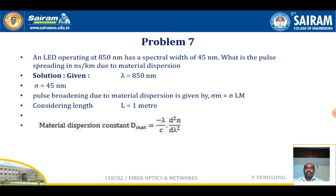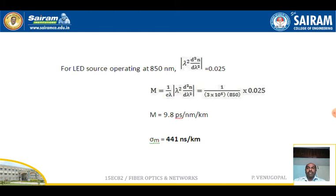Pulse broadening due to material dispersion is given by sigma_m = sigma × L × M, considering length L = 1 meter. The material dispersion constant D_mat = −(lambda / c) × (d²n / dlambda²). Substituting values for an LED source operating at 850 nanometers: lambda² × (d²n / dlambda²) = 0.025. Then M = (1/c) × lambda × 0.025, substituting c = 3 × 10⁵ km/s and lambda = 850 nm.